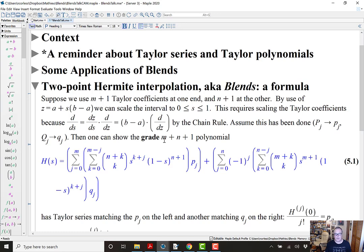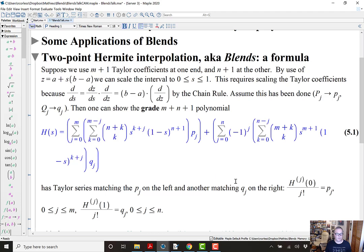So, if you do that, then you can show that the grade m plus n plus 1 polynomial. Grade is an upper bound on the degree, so the degree of the polynomial is no higher than m plus n plus 1. So, this polynomial given by this formula, which has got binomial coefficients in it and each term is polynomial in s, s to some power times 1 minus s to another power times pj. And, here we've got (-1)^j times qj's and a similar binomial coefficient and a similar s to something times 1 minus s to something in the second thing.